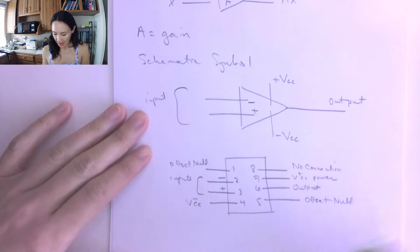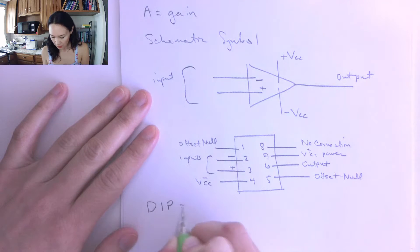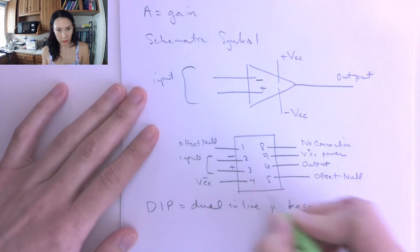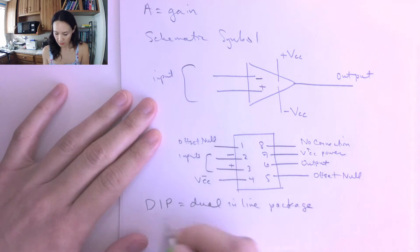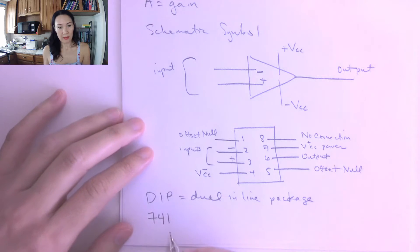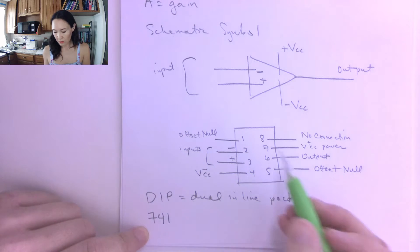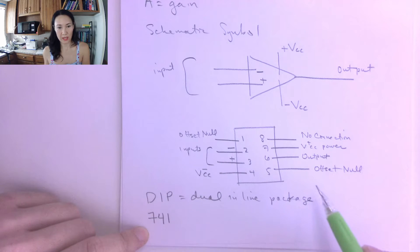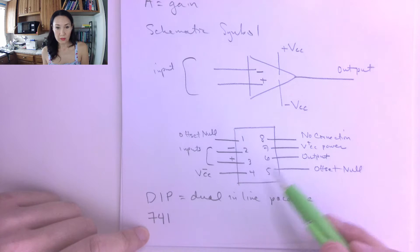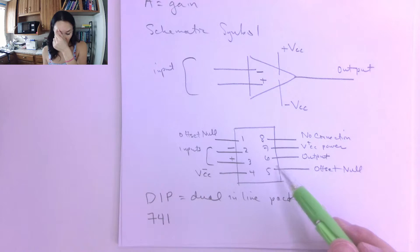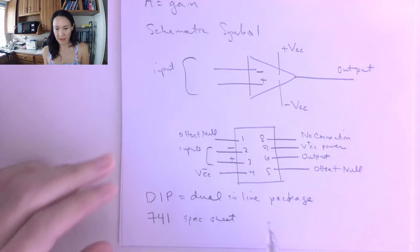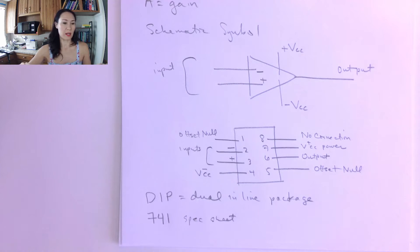This particular package is a dual inline package — an integrated circuit chip. The one we'll be using in this class is the 741 op amp. You can Google the spec sheet for the 741 op amp, which will give you more specifications on all the pins. This is called a pin-out diagram. It will also give you maximum and average values for the operating region. I encourage you to look up the spec sheet, which we'll also do together in the op amp lab.